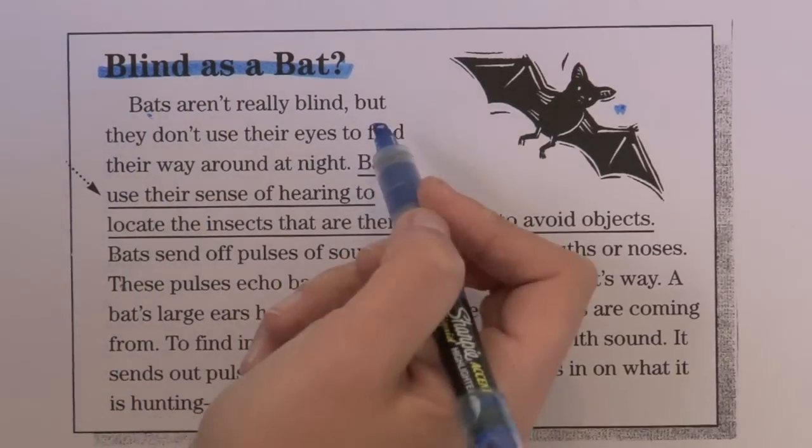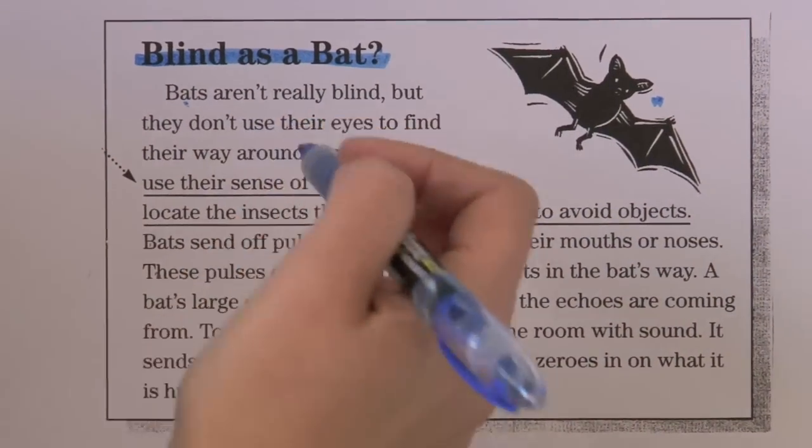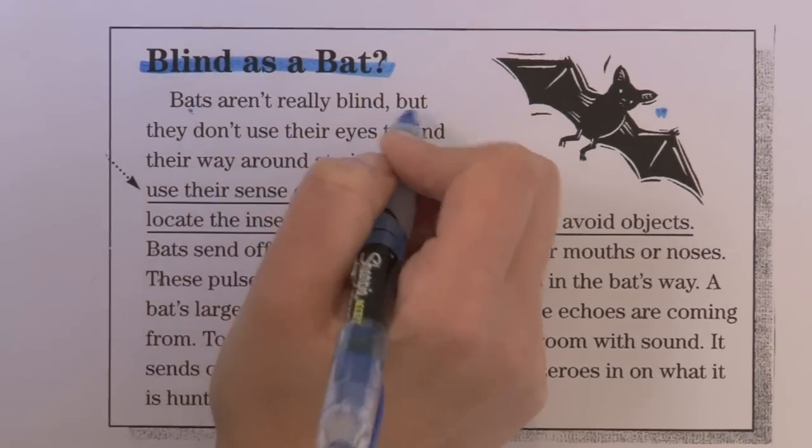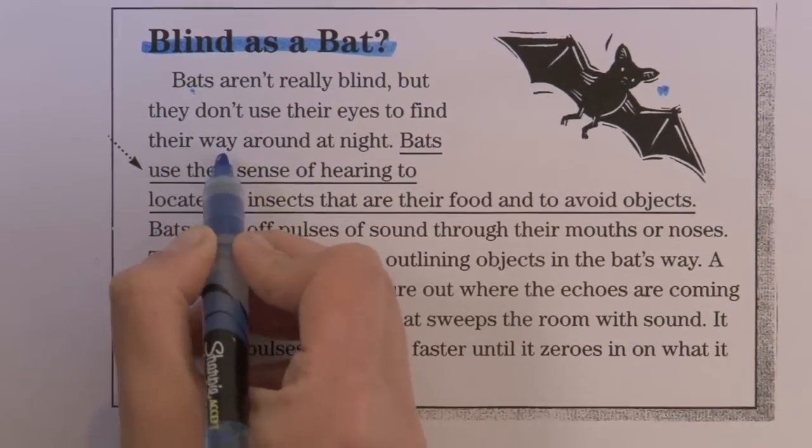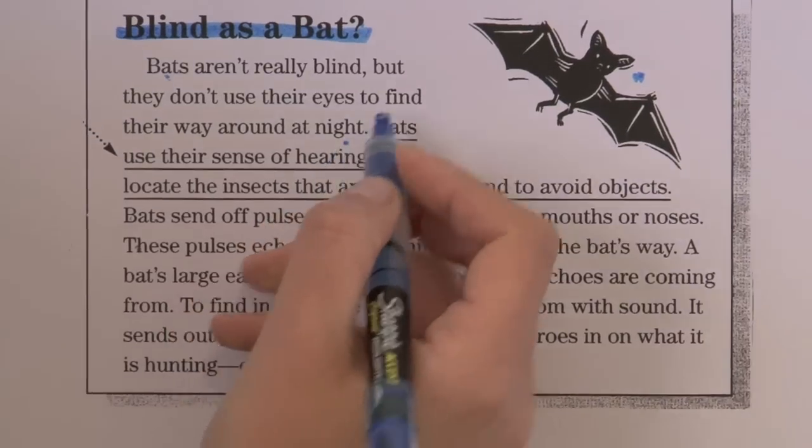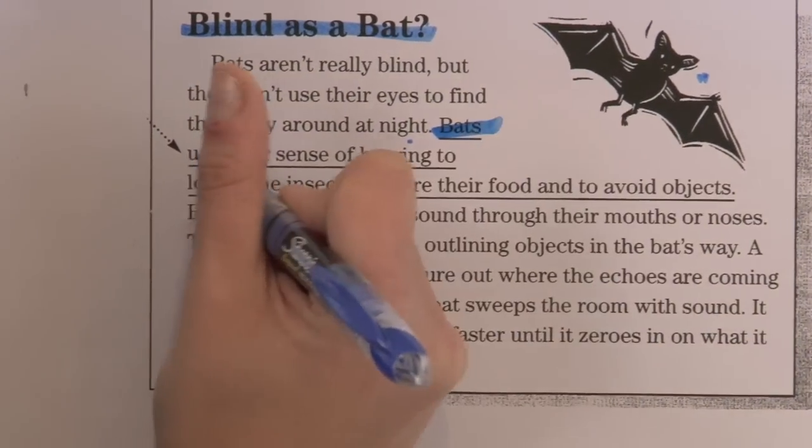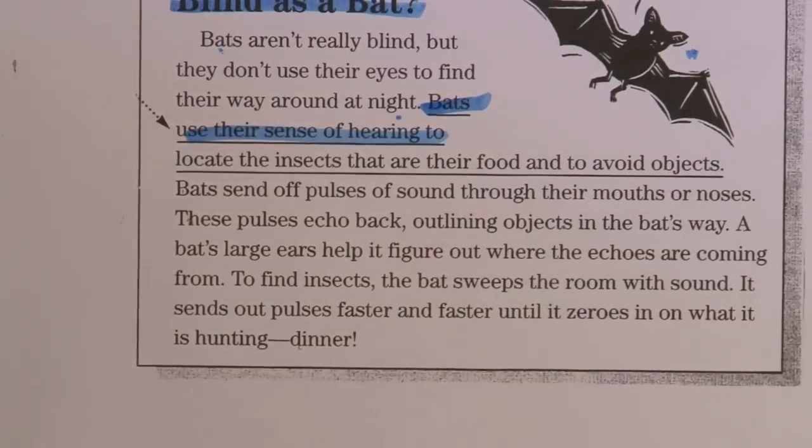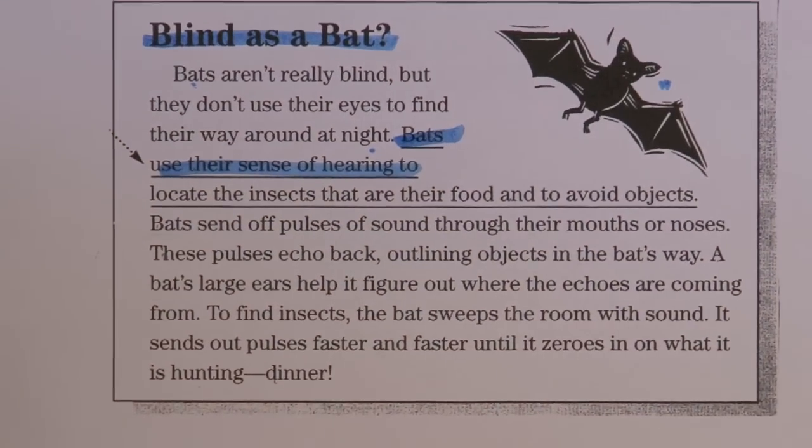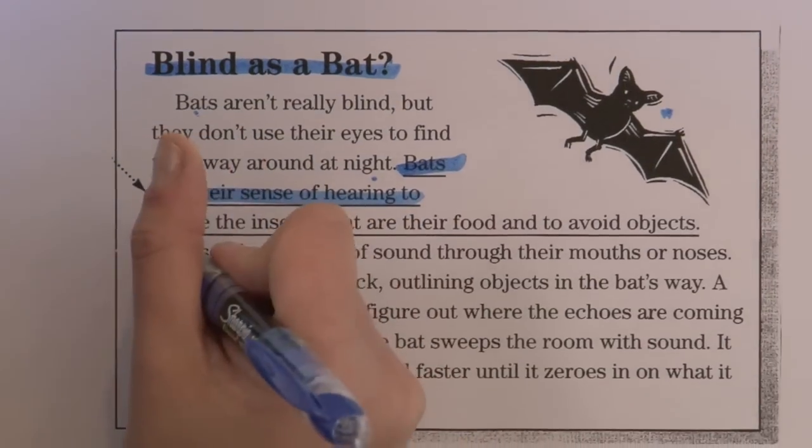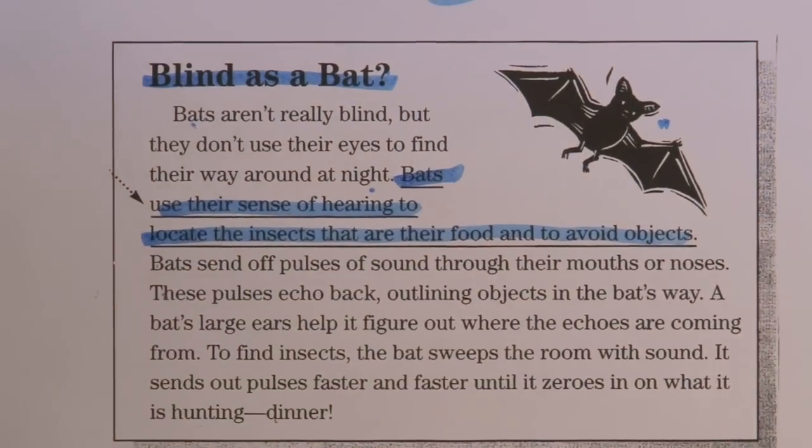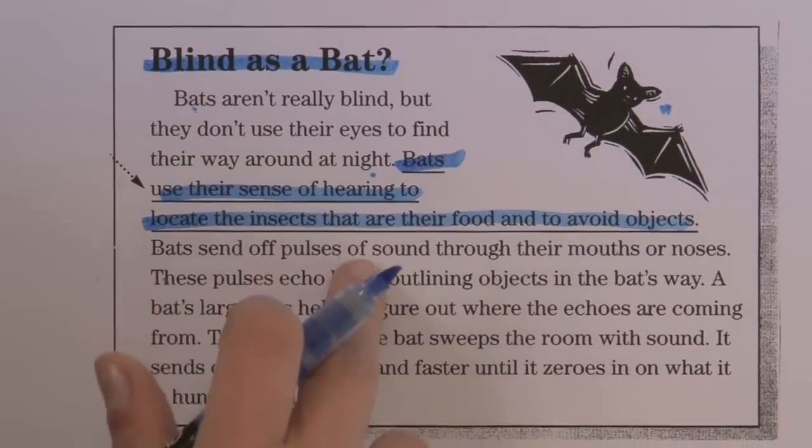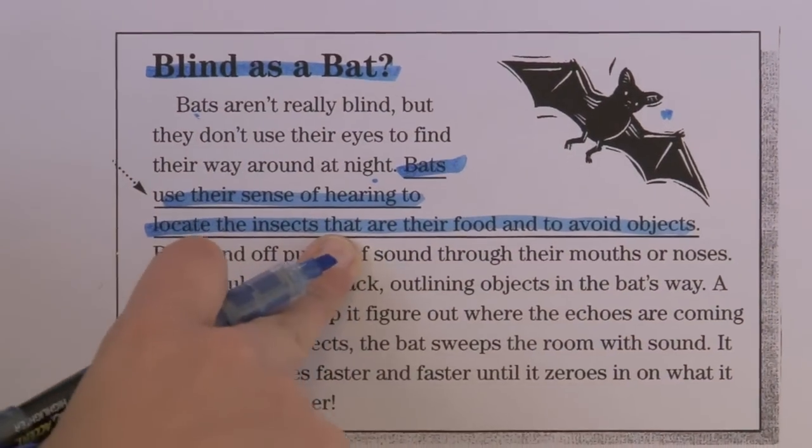Bats aren't really blind. Did you know that? I didn't. Bats aren't really blind, but they don't use their eyes to find their way around at night. Bats use their sense of hearing—hearing, one of your five senses too—to locate the insects that are their food and to avoid objects. That's a very important part. Main idea.